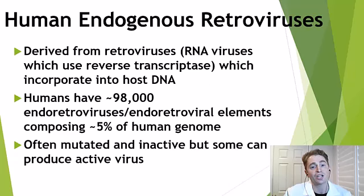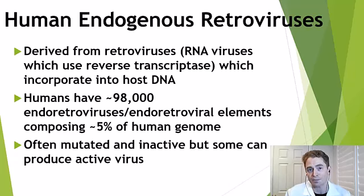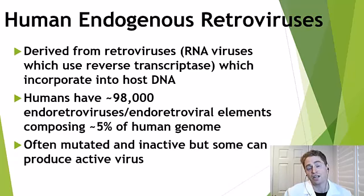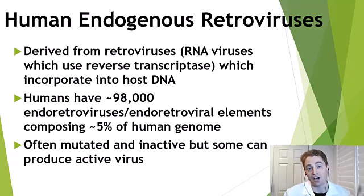It turns out sometimes these viruses can get into the germ line — in other words, into the egg or sperm cells. In the next generation, they end up in all the cells of the organism, and then they pass to the children, grandchildren, great-grandchildren. In other words, they just become part of our genome — endogenous, hence endogenous retroviruses.